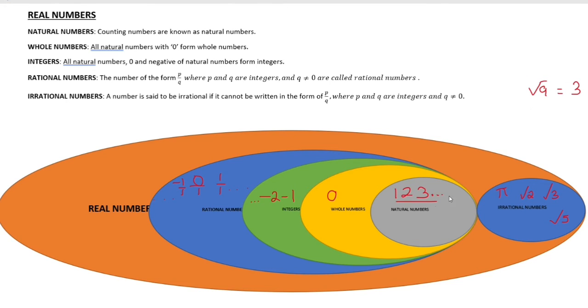So, to summarize: Natural Numbers, Whole Numbers, Integers, Rational Numbers, and Irrational Numbers together form Real Numbers.